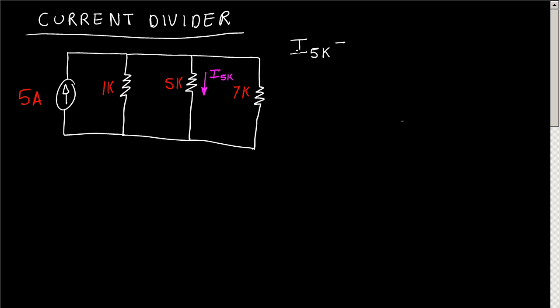5K is equal to the current source, which is 5 amps in this case, times the total resistance in parallel. So for this case we have 1K in parallel with 5K and 7K, and all of that you have to...